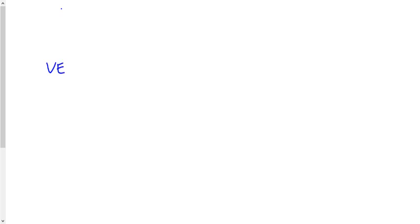There were two terms that we defined yesterday to lead off the class. They were a vector and a scalar. One of these has only magnitude — magnitude meaning amount or size. One of these has both magnitude and direction, so the size and which direction it's pointing in.